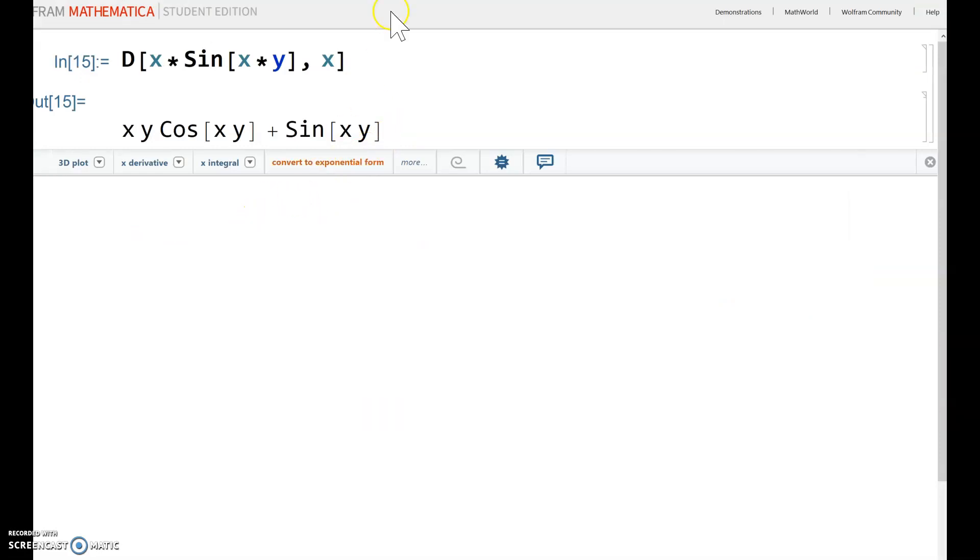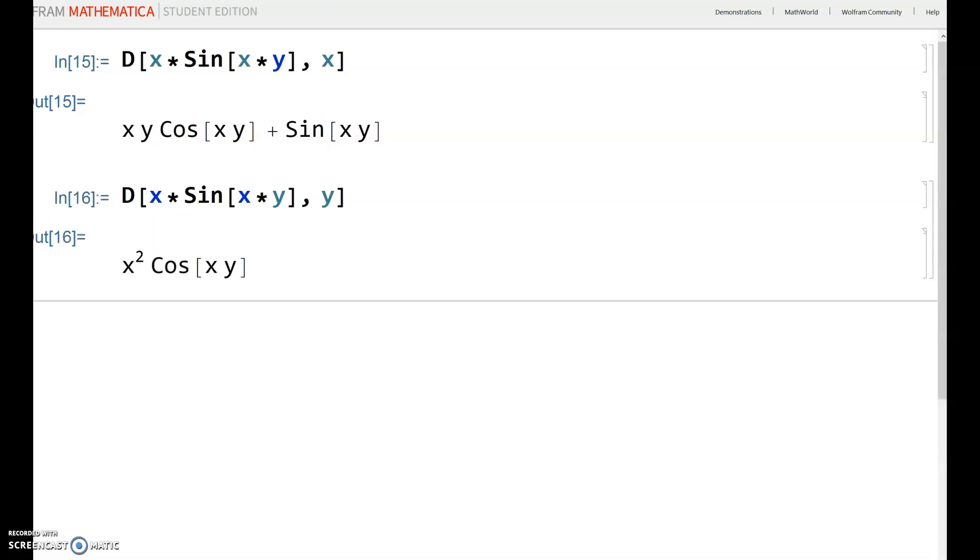Now, if you want the derivative with respect to y, then just do capital D and type it in again. So x times sine x times y, comma, then y, then closing square brackets. That gives you the derivative with respect to y - x squared cosine xy.